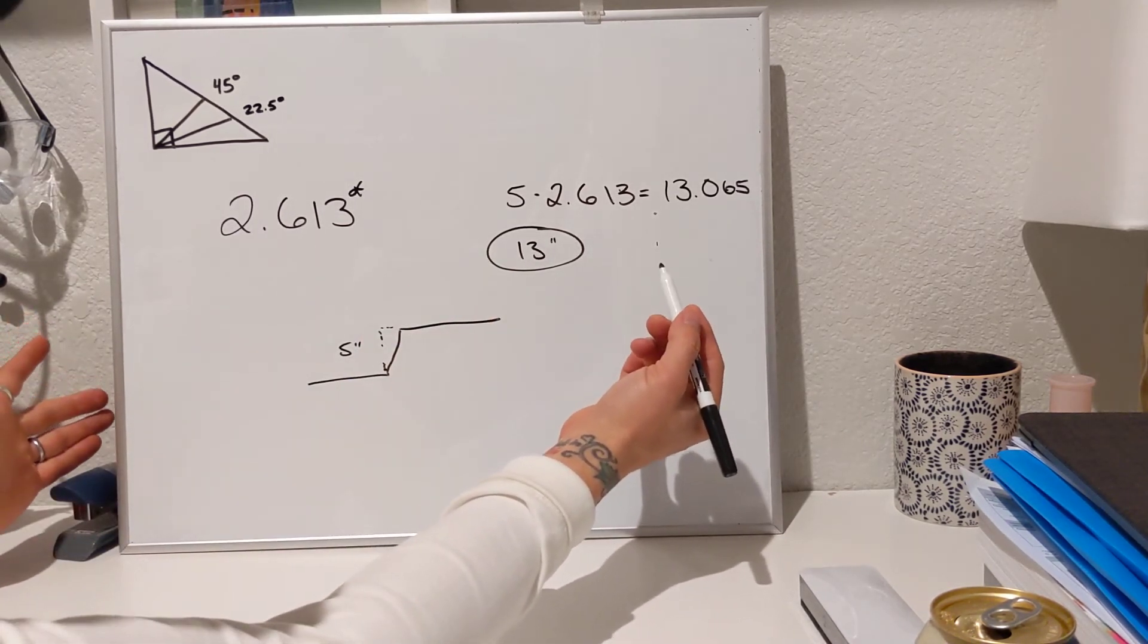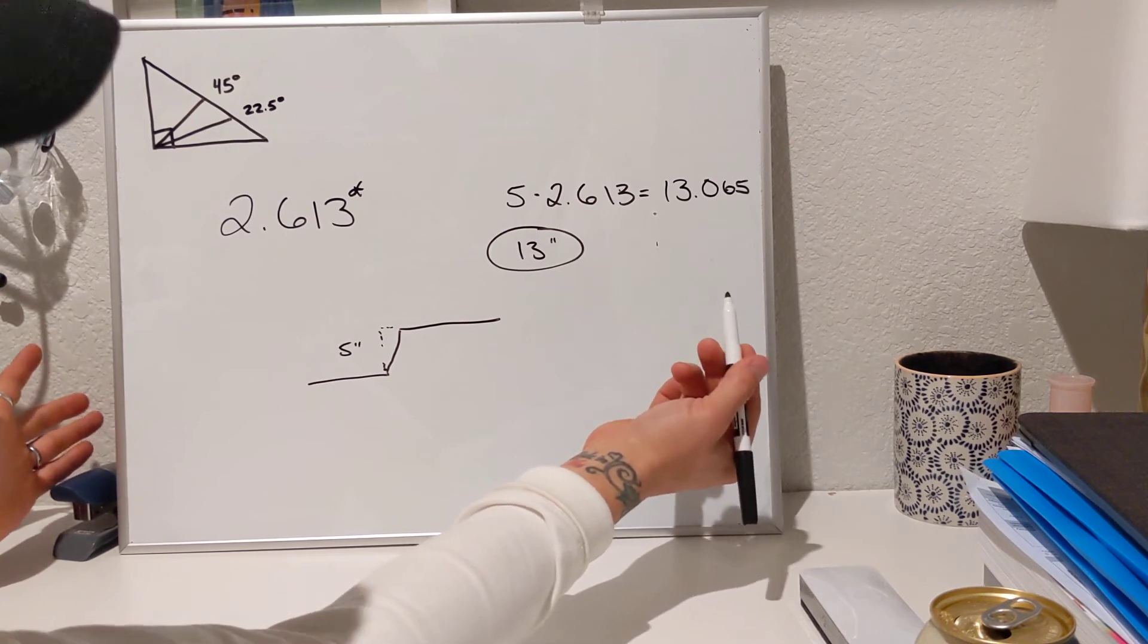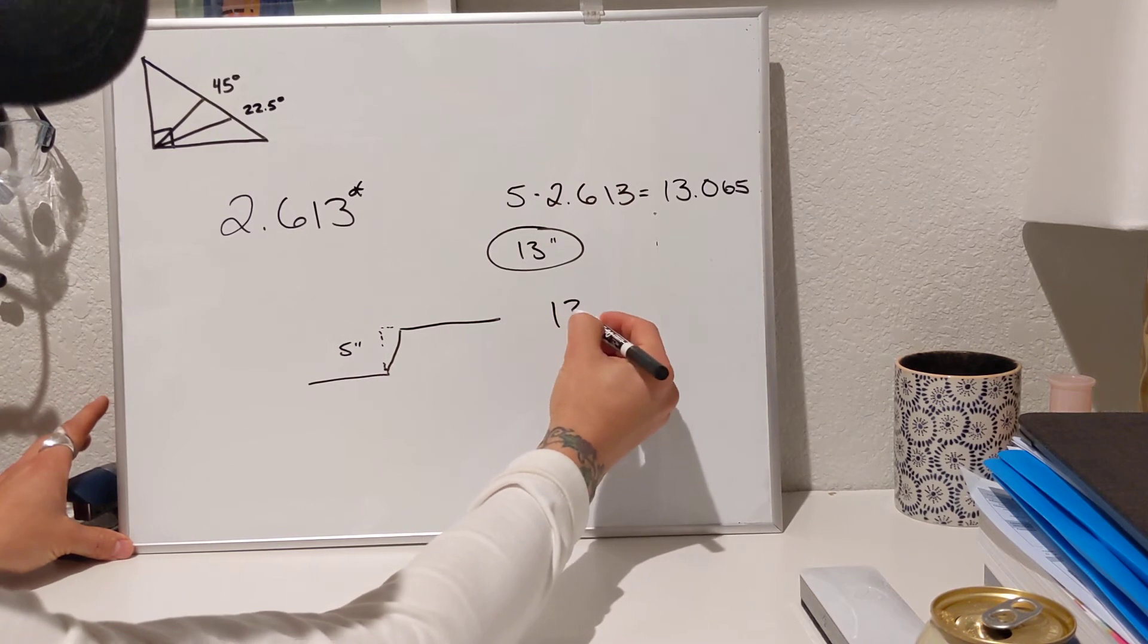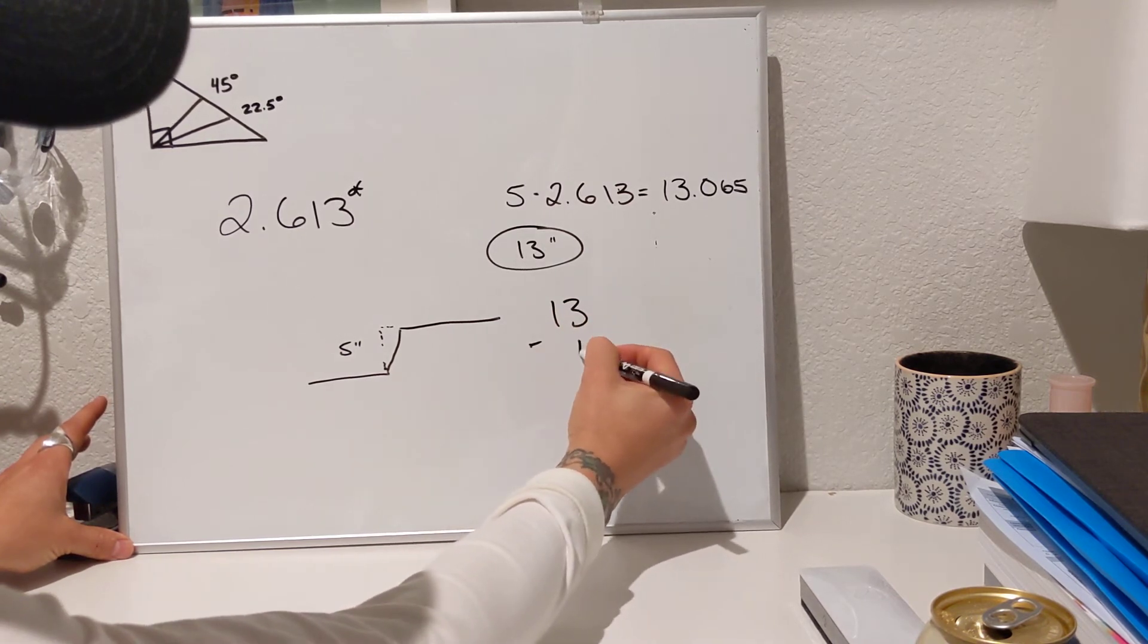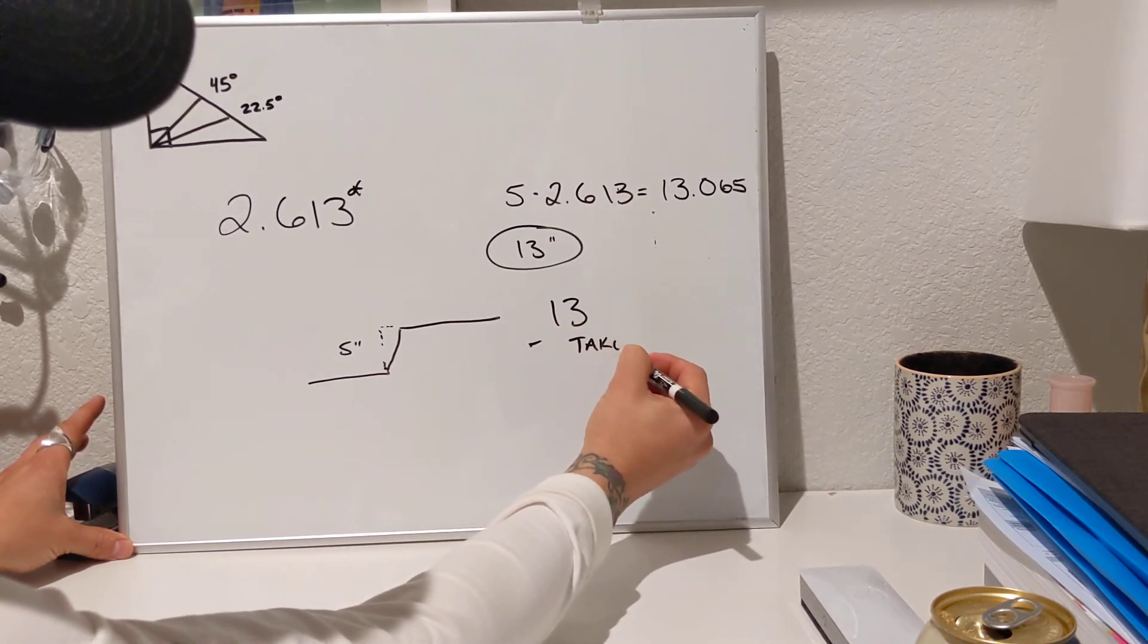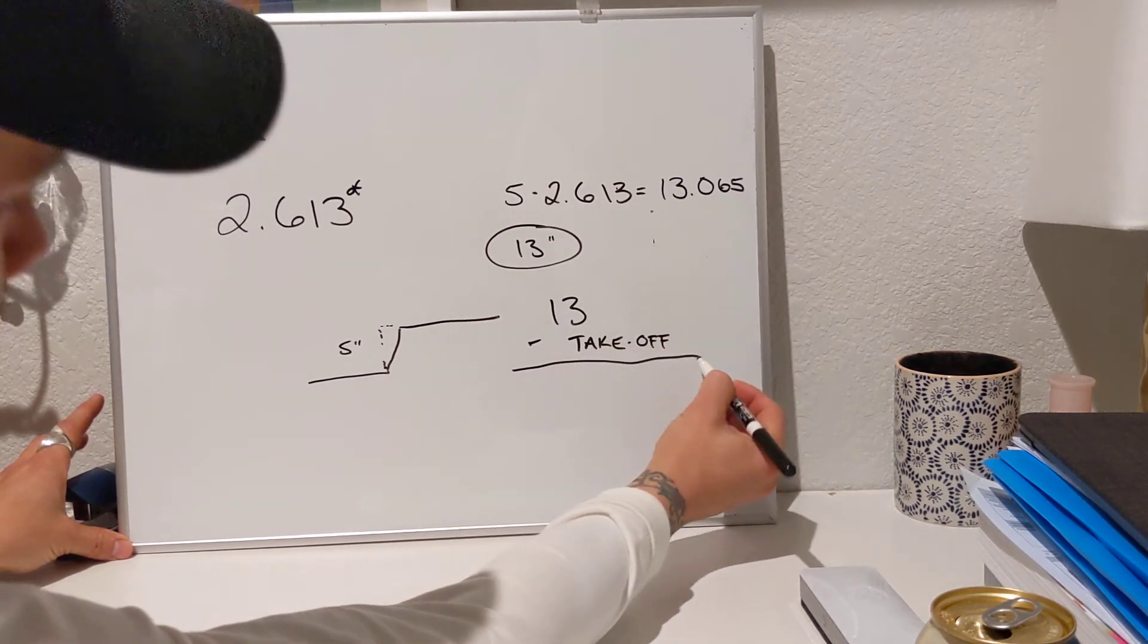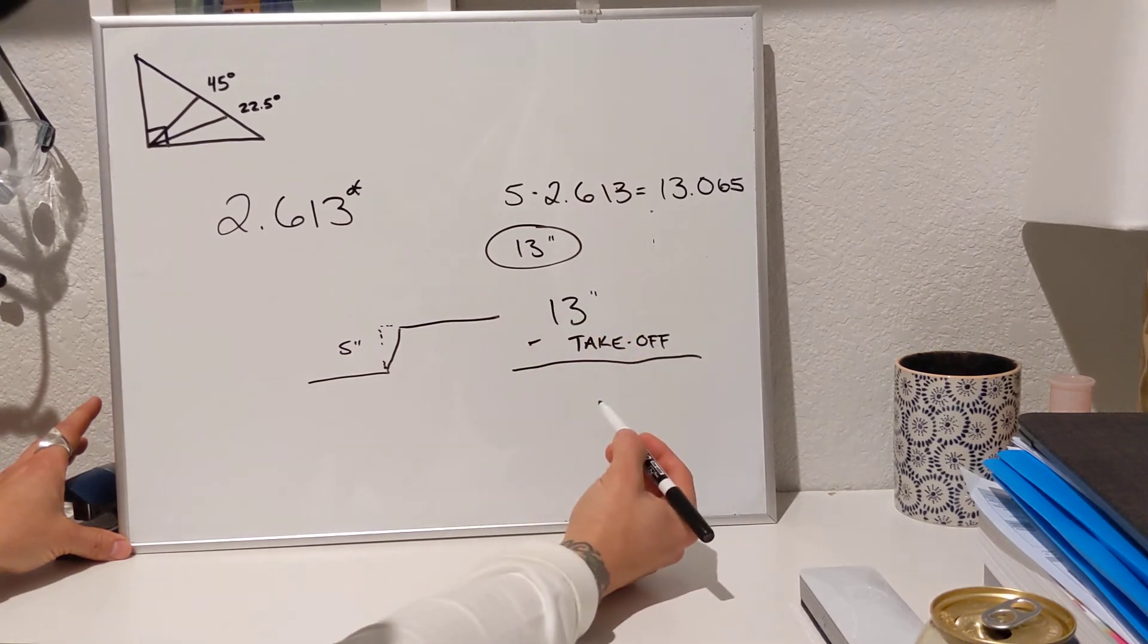Usually we're going to use some cast iron. You could do it in PVC and I think you also can do it in DWV copper. So you're going to take 13 inches, subtract your take off of fitting...